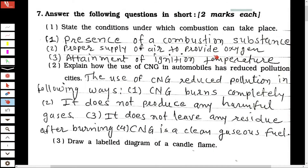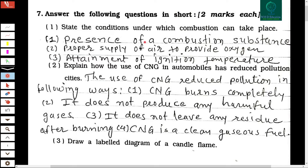Before starting this session, if you haven't seen the first part, you can get the link in the description or on the 'i' button. Now, Question number 7: Answer the following questions in short. The first question is: state the conditions under which combustion can take place.